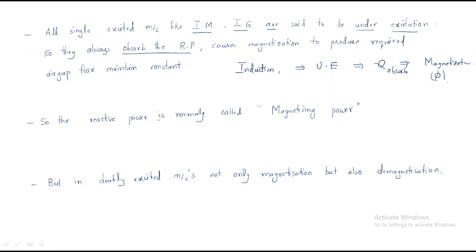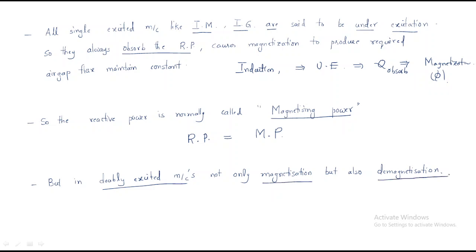Magnetization means the machine takes reactive power to maintain the required air gap flux constant. Therefore, reactive power is normally called magnetizing power. Another name for reactive power is magnetizing power, because reactive power itself maintains the magnetic flux.